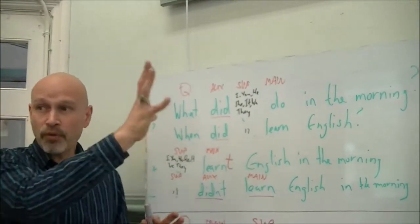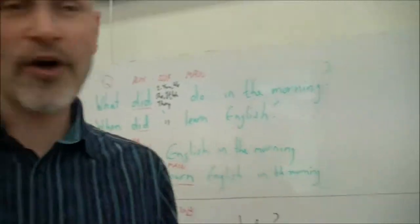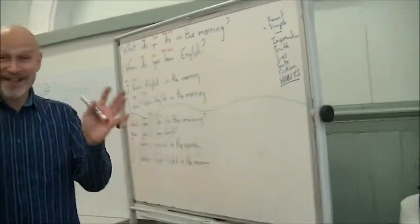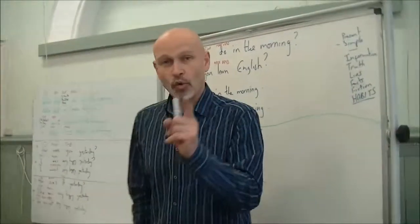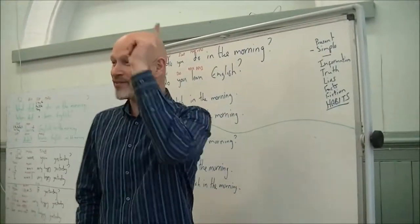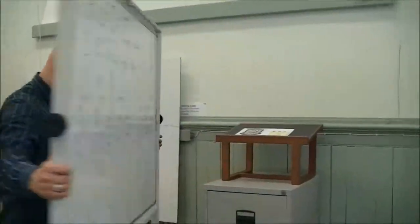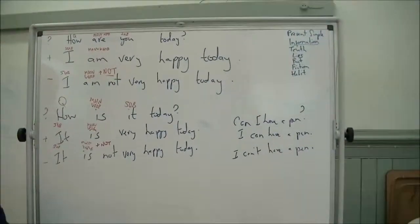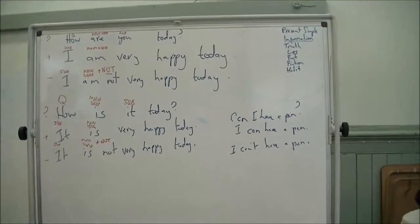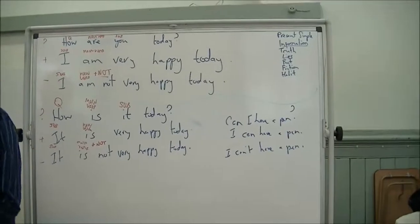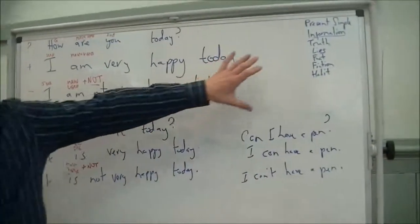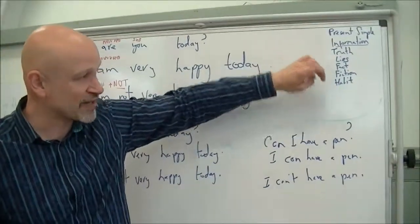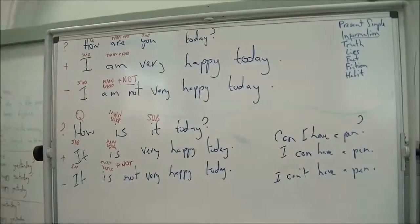That's the present simple for all verbs, with the exception of one verb — the verb 'to be.' When you have present simple with the verb 'to be,' things are different. We still use it for the same reasons: truth, lies, fact, fiction, habits. This is more like a feeling — information about how you are feeling today. How do you feel today? Or the main question: how are you today?